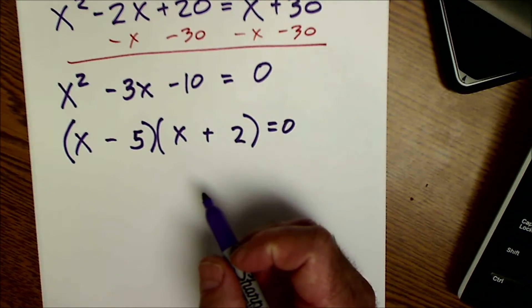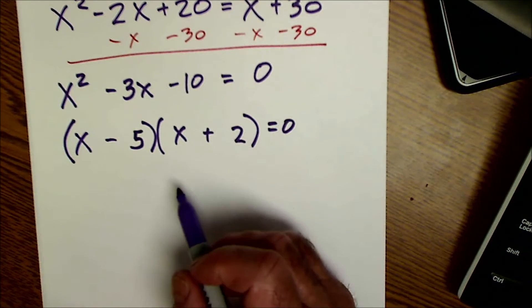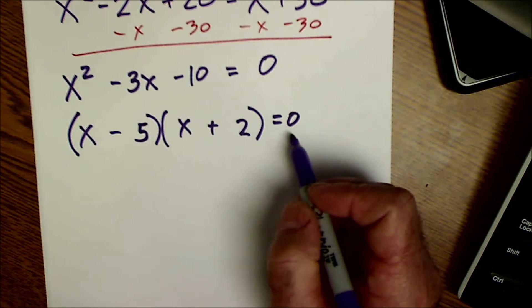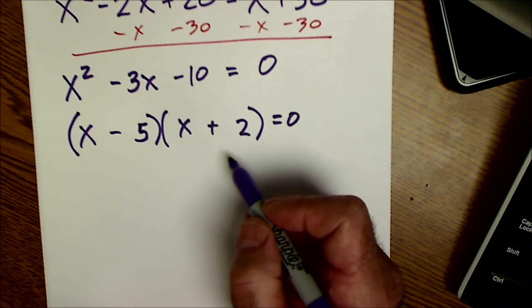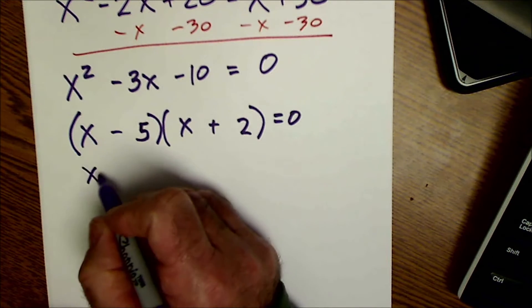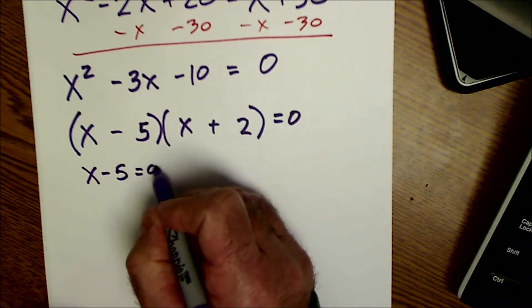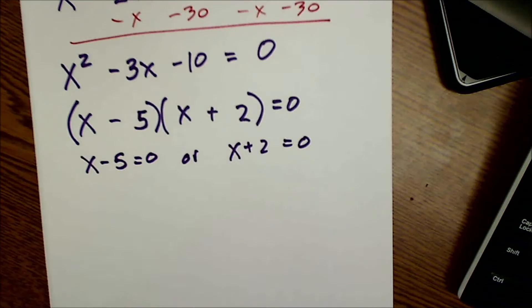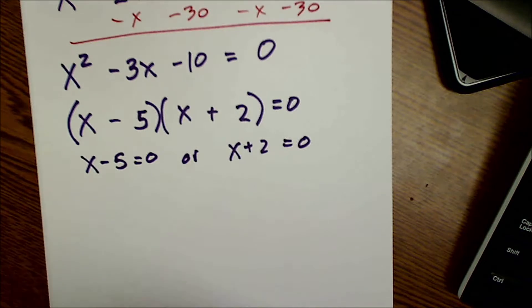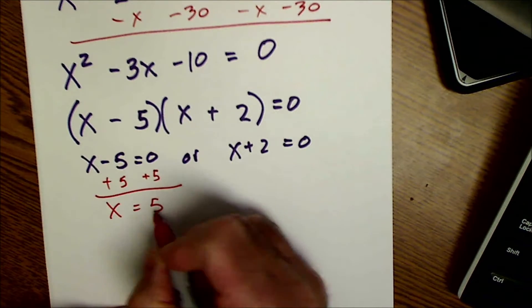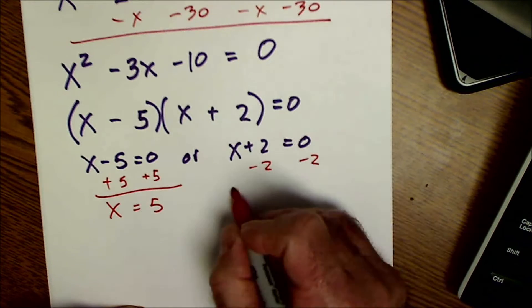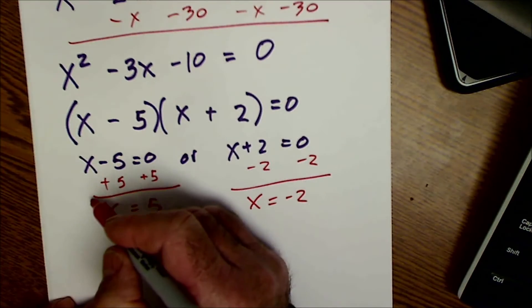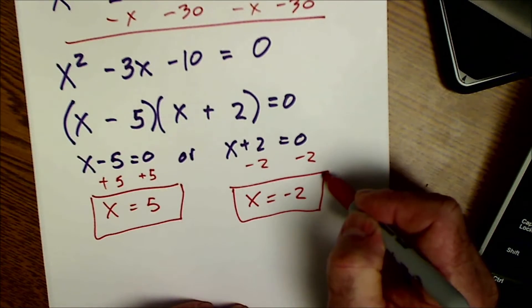Now that I've factored it, I use a zero sum property to find the root. If this thing is equal to zero, the whole thing will be equal to zero. Or if this thing is equal to zero, the whole thing will be zero. So either x minus 5 is equal to zero, or x plus 2 is equal to zero. I'm going to add 5 to both sides here and see that x is equal to 5. Or I'm going to subtract 2 from both sides and see x is equal to negative 2. So my two roots are 5 and negative 2.